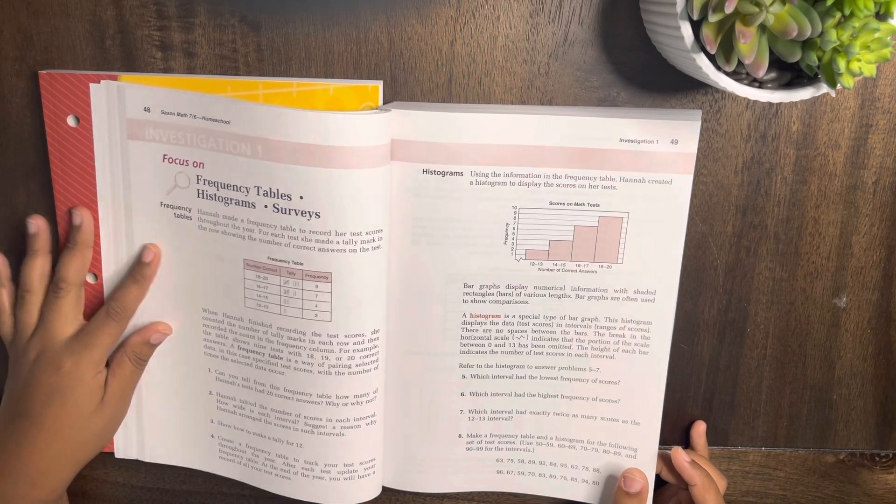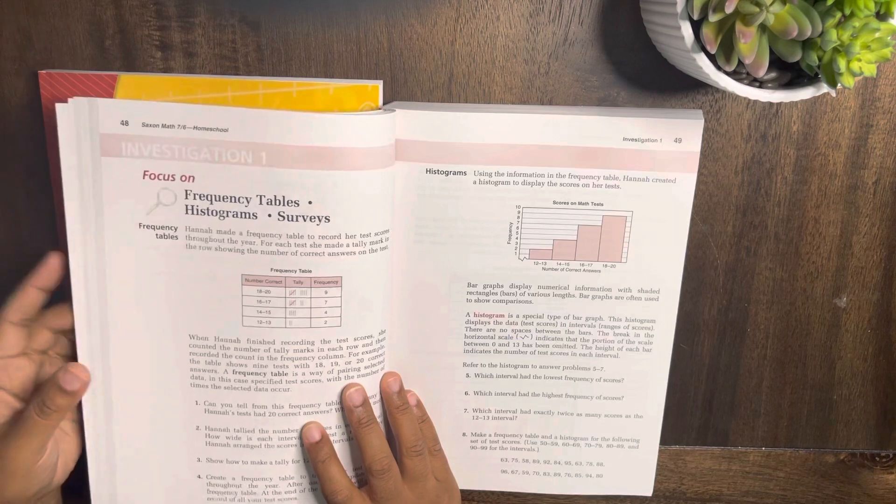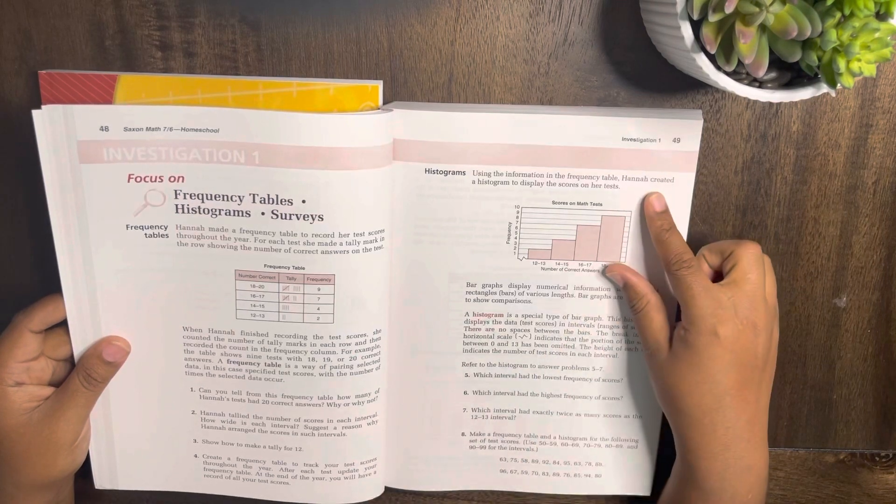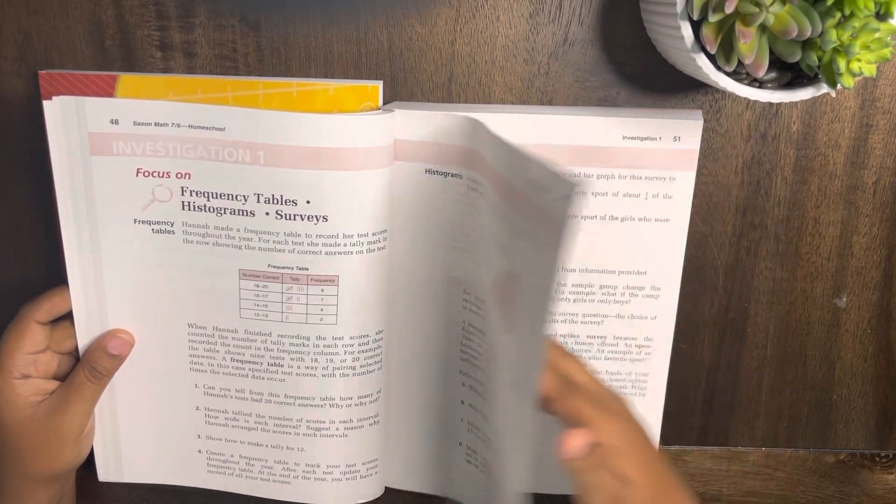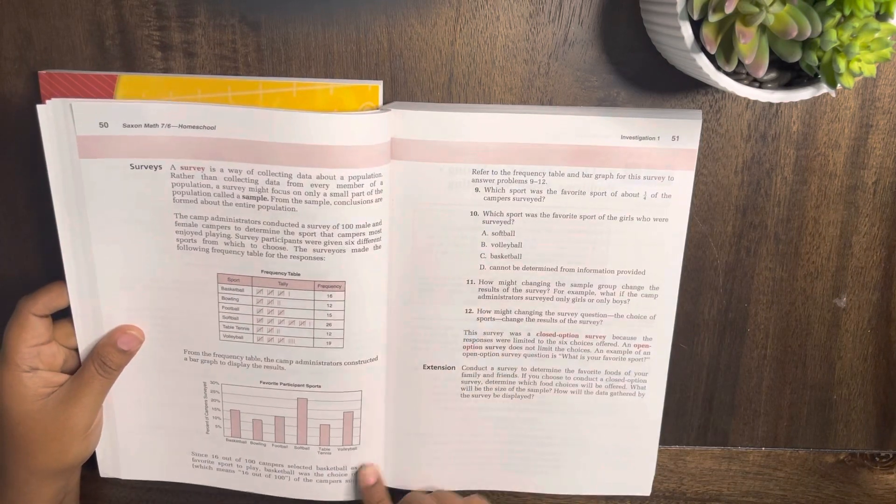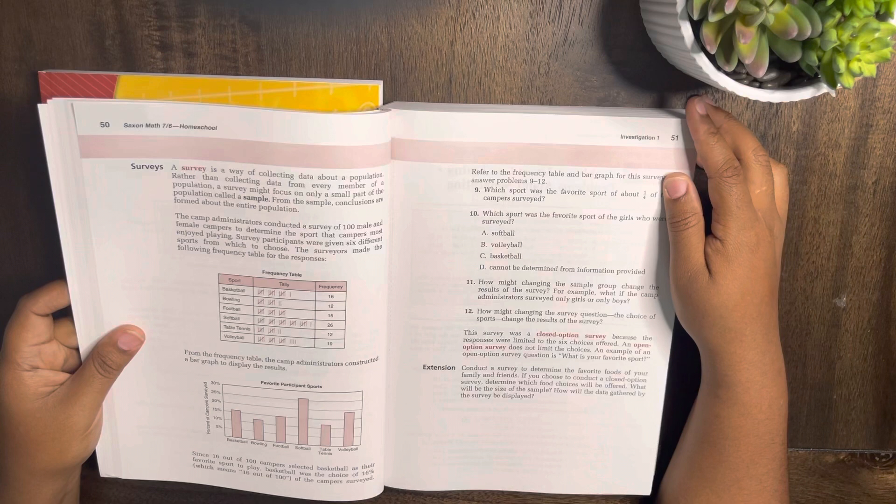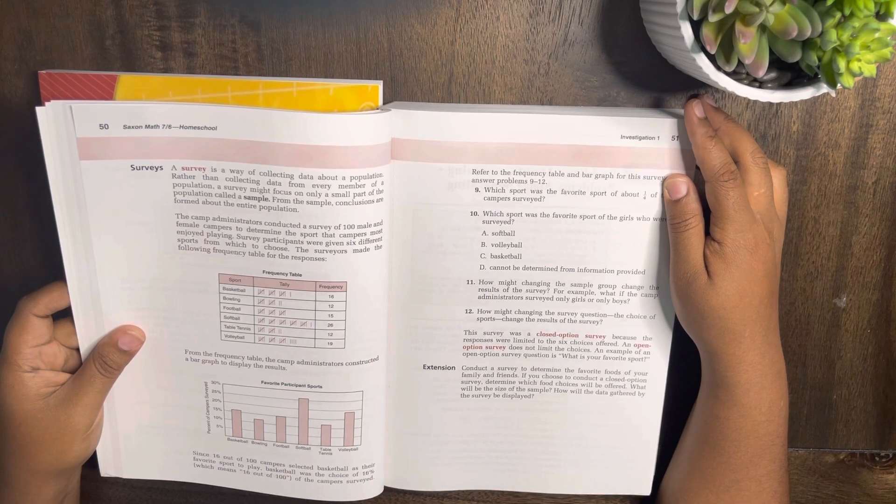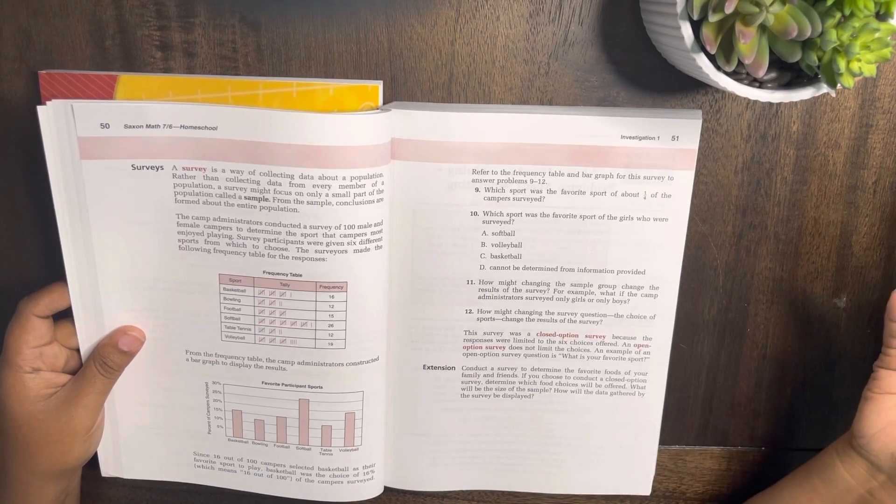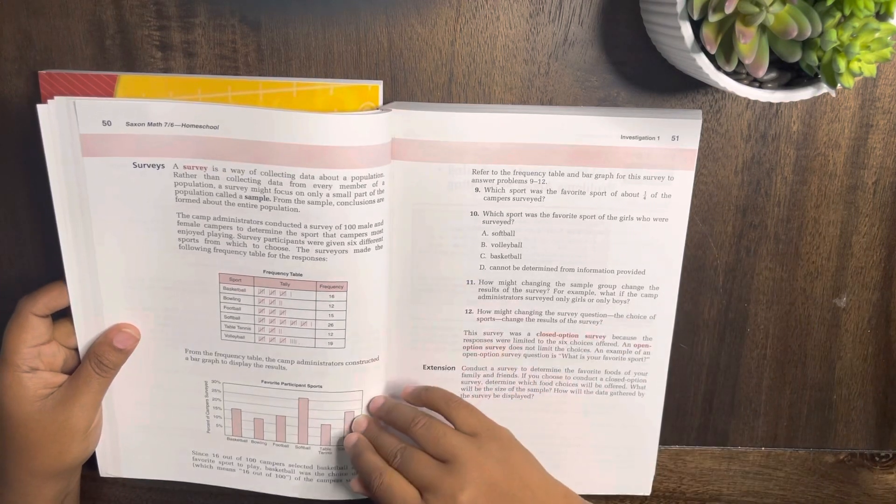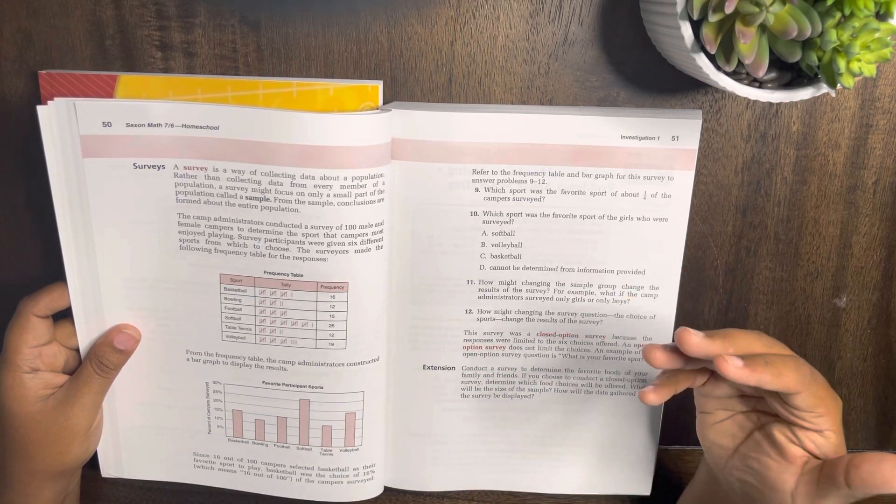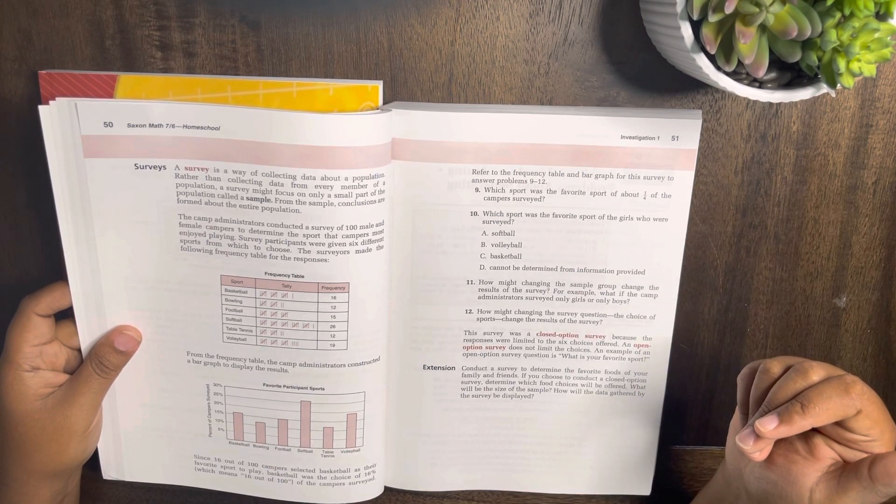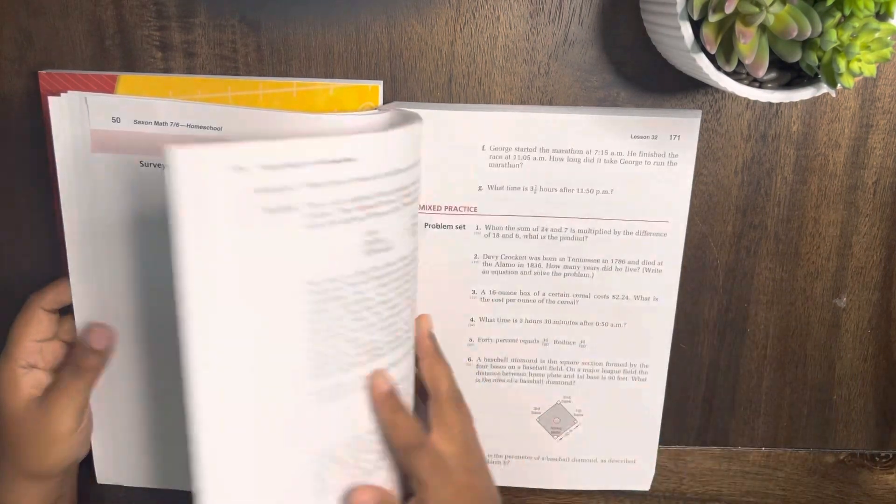Frequency tables, histograms, and survey. It starts out with a word problem. It gives you a chart and you have to answer these questions, and then another chart, more questions, charts, a survey, more questions. The investigations don't seem too hard, but you're just investigating and digging deeper basically into math and learning. Based off of these charts, how to come up with answers, how to figure out who, what, where, why, those types of things.